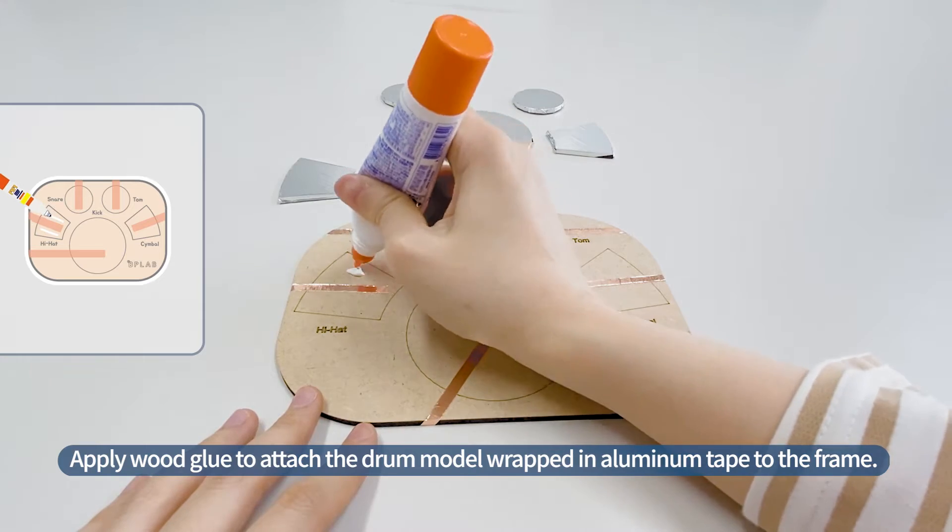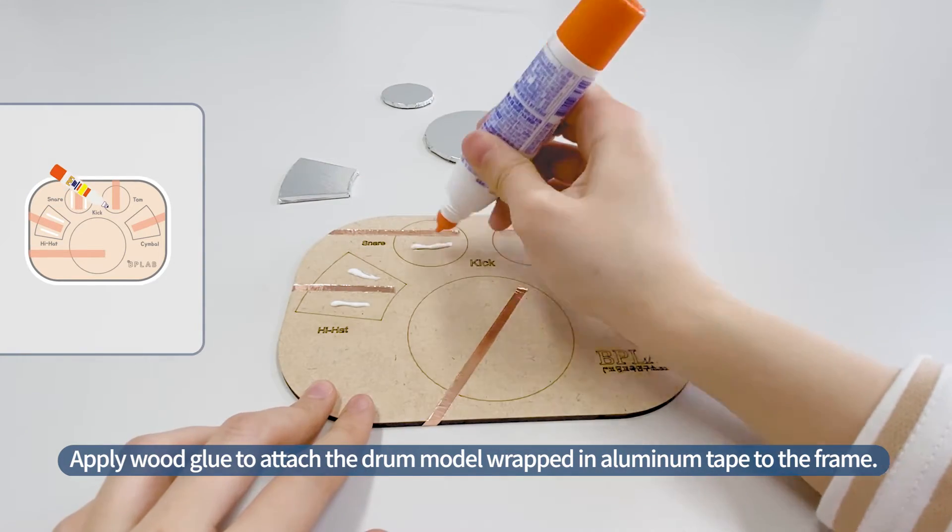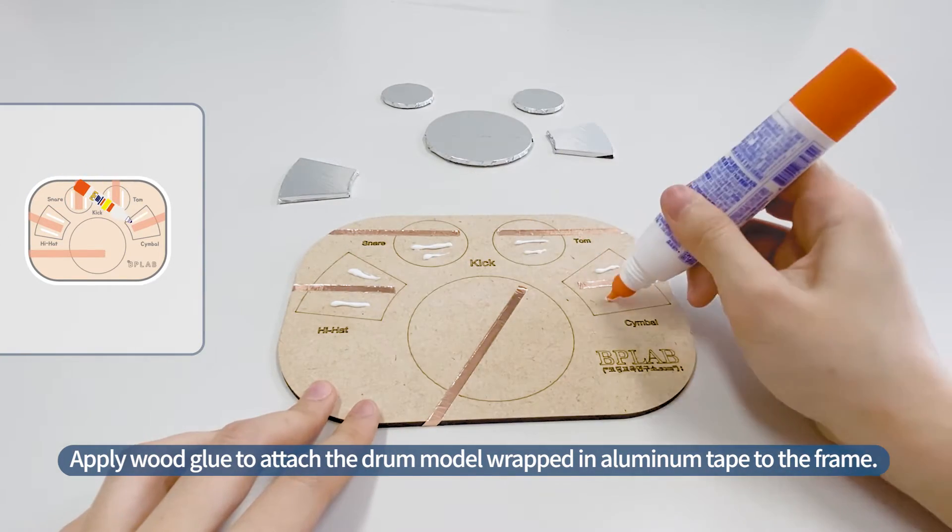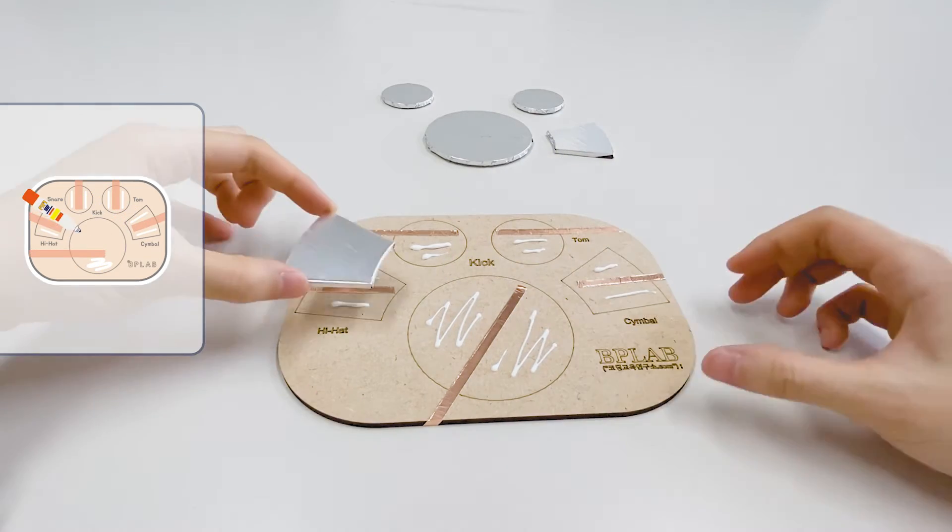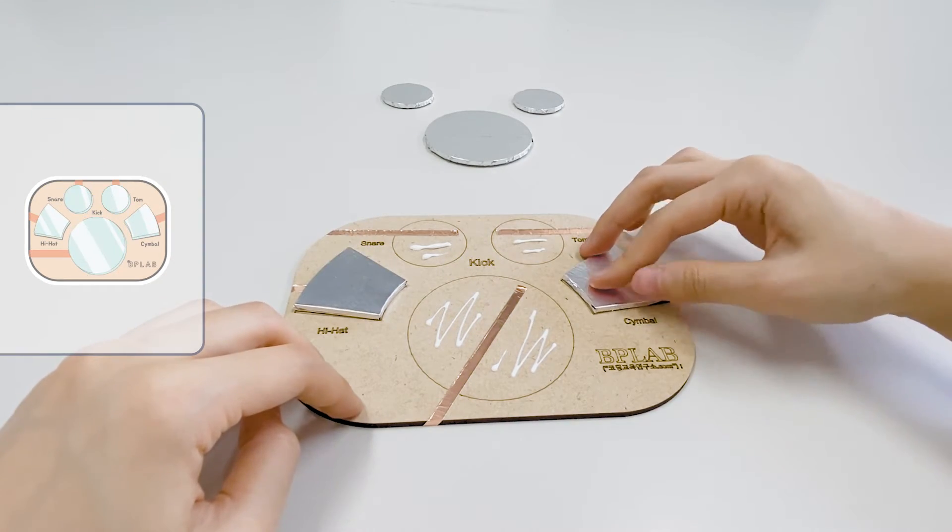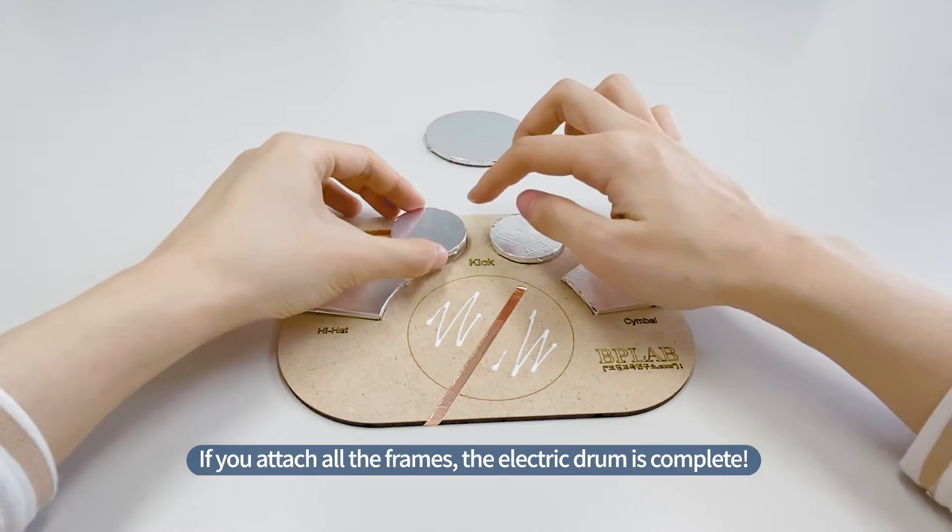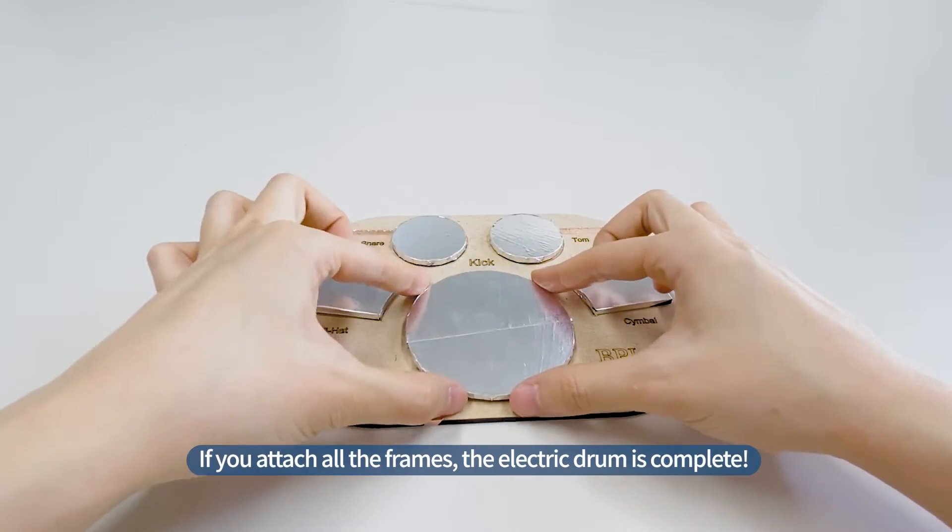Apply wood glue to attach the drum model wrapped in aluminum tape to the frame. If you attach all the frames, the electric drum is complete.